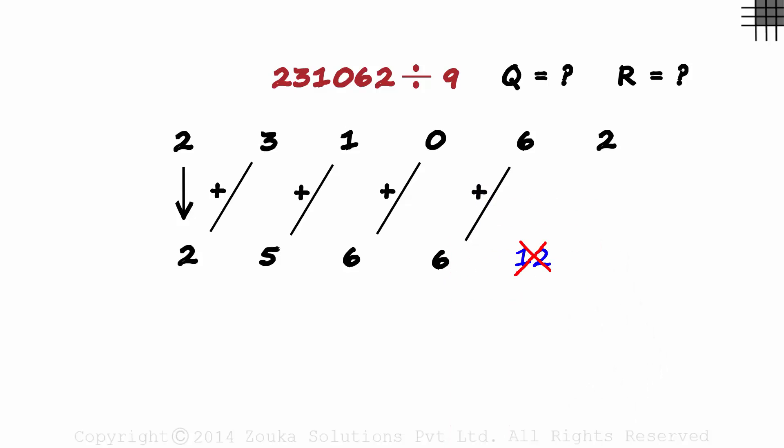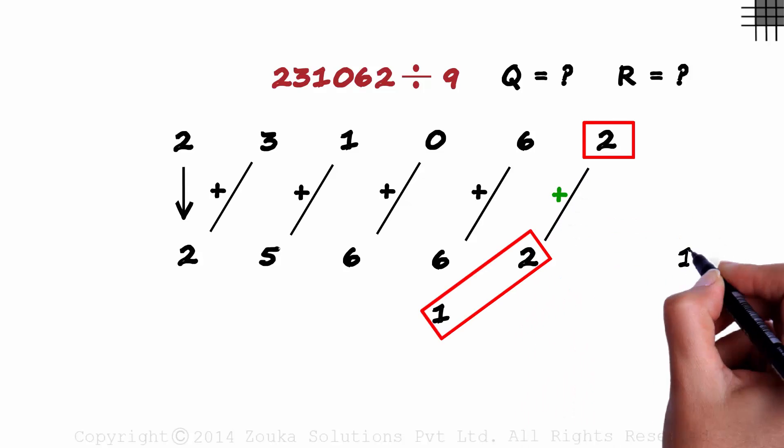Now we cannot write a two-digit number here, so we write 12 like this: 1 under the 6 and 2 here. And 12 plus 2 is equal to 14.